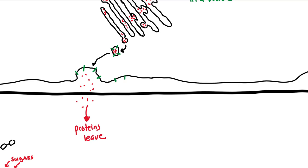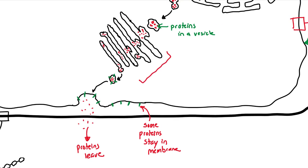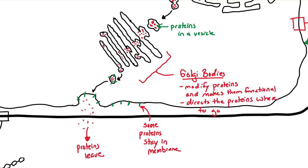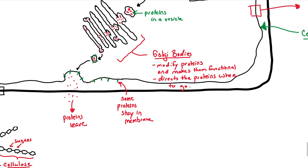Some of the proteins, the green ones, you can see become incorporated into the actual cell membrane. Again, these proteins come from the rough ER. Rough ER makes proteins that leave or stay in the membrane. The Golgi bodies are an intermediate. They will modify the proteins, making them functional, and it also tells the proteins exactly where to go. Kind of like a postal service.